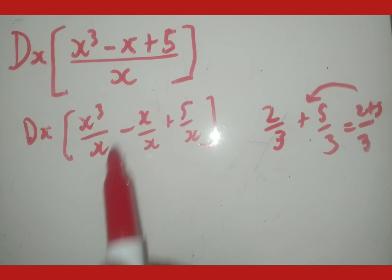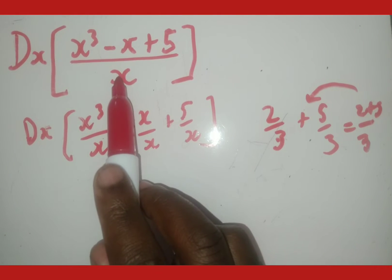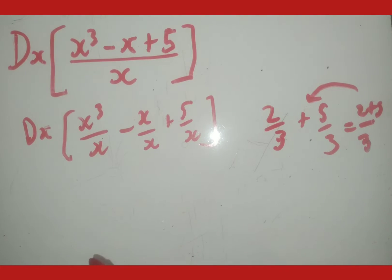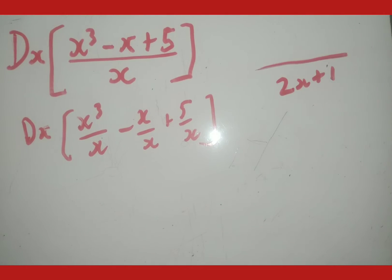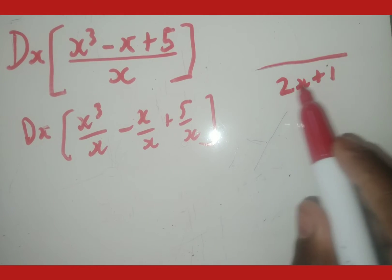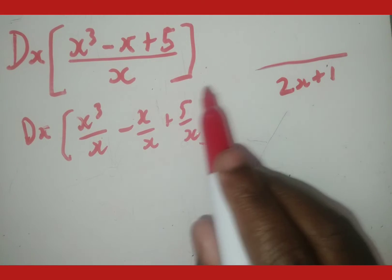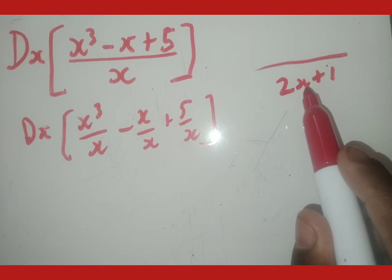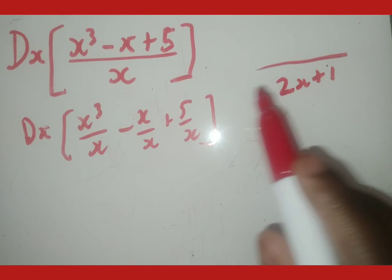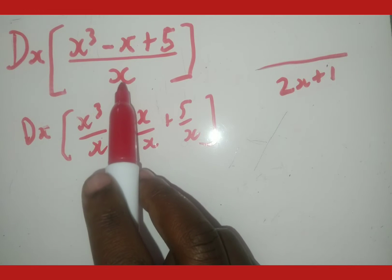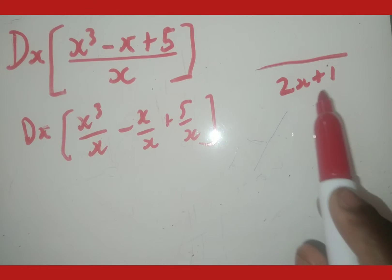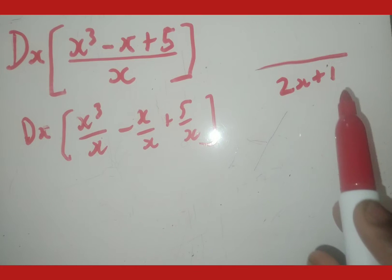Whenever there is one term at the bottom, you have to split them. What about when there are two terms or more? When we've got two terms or more in the denominator, what we have to do is factorize — we'll get to that in the next exercise. So just remember: one term, you split; two or more terms, you factorize.